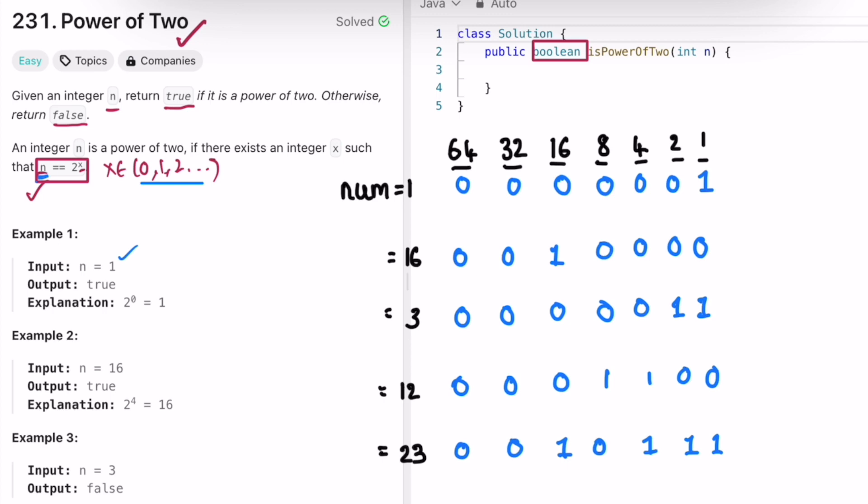Only 16 and 1 are powers of 2 because this can be written as 2^0 and this can be written as 2^4, and all the others are not powers of 2.